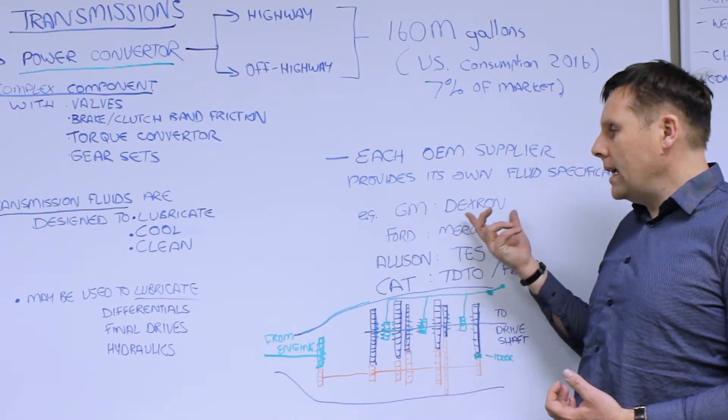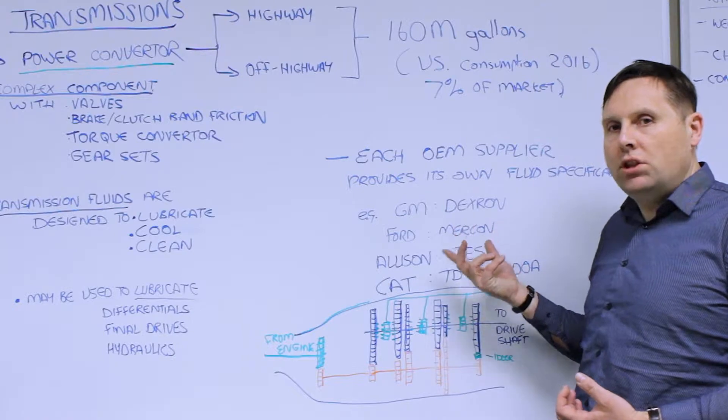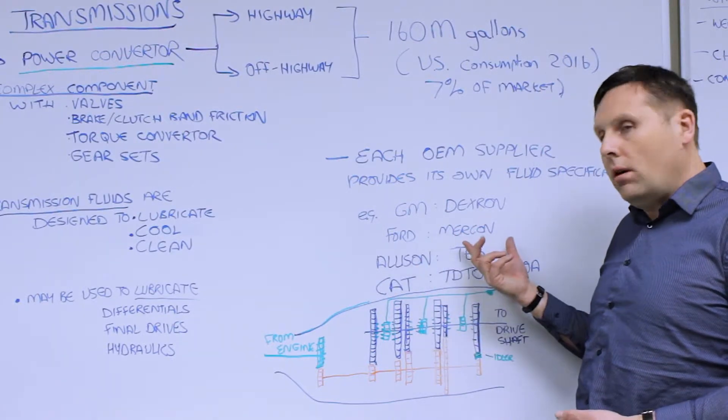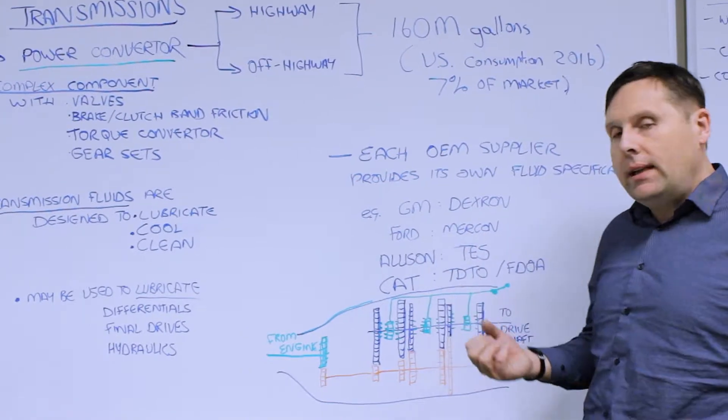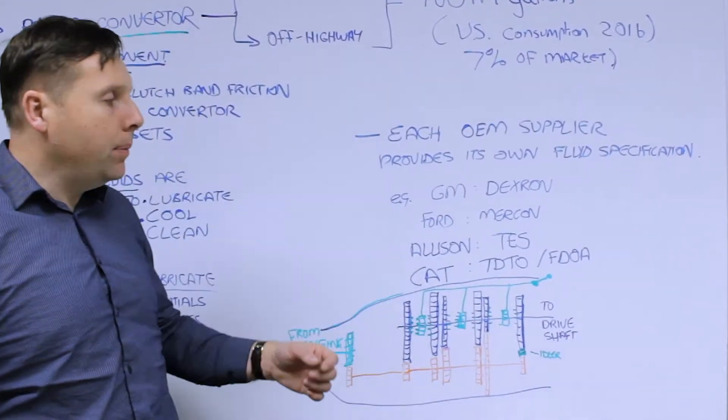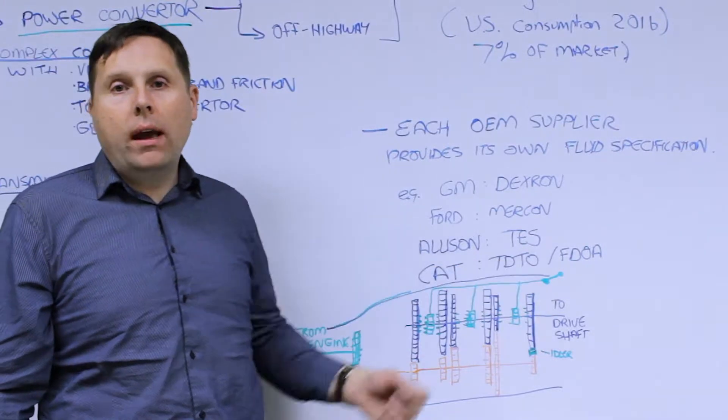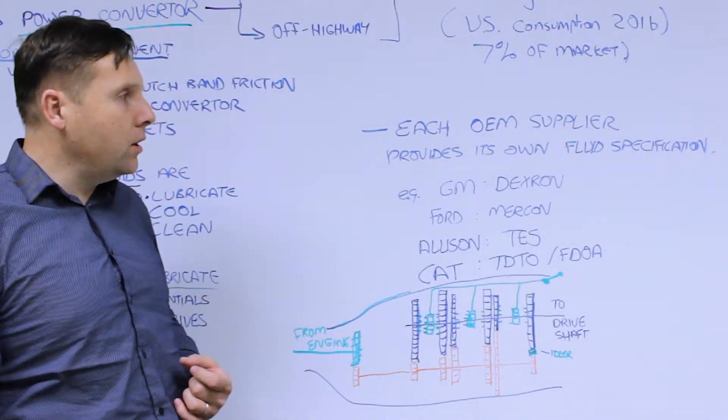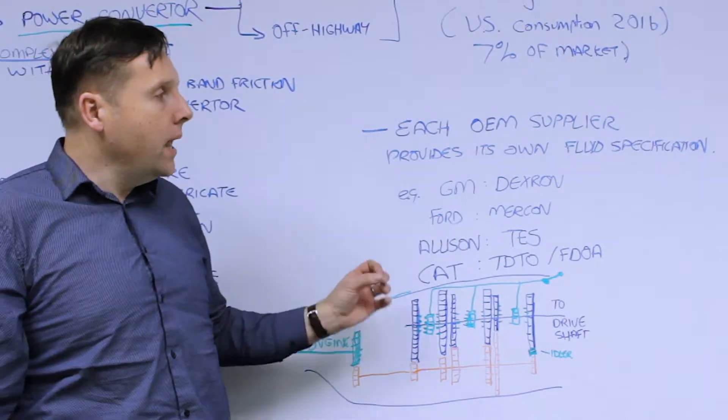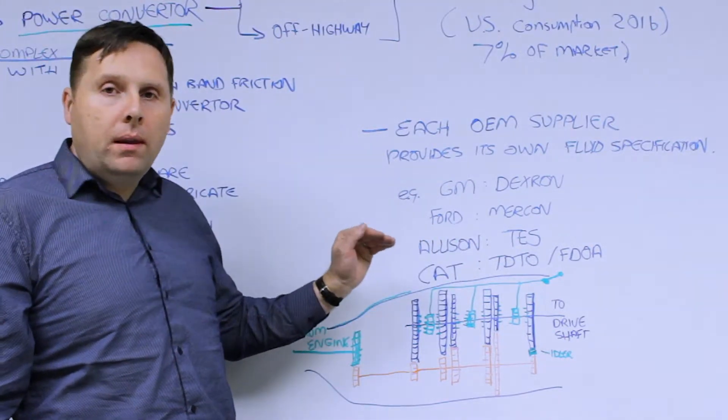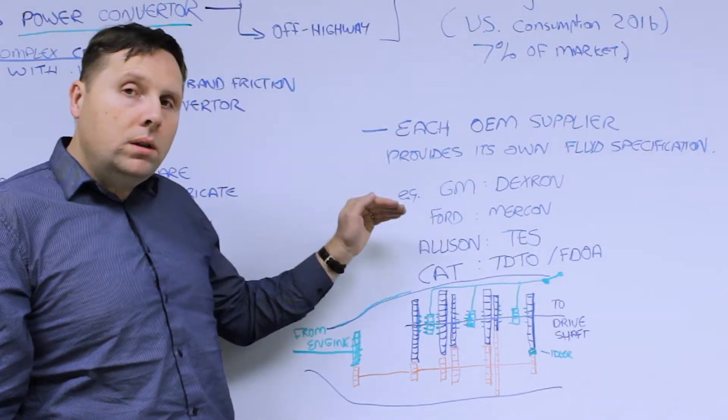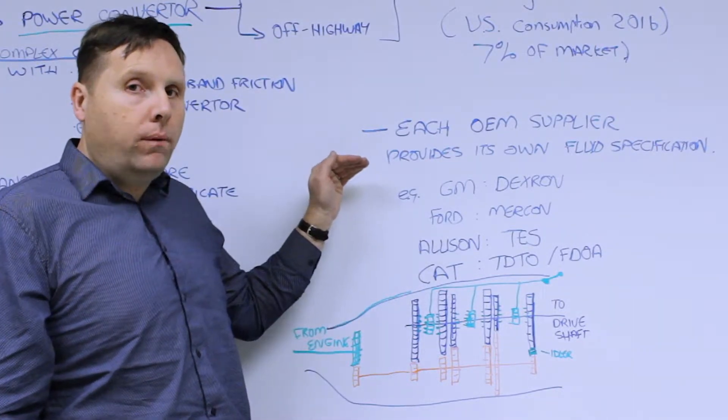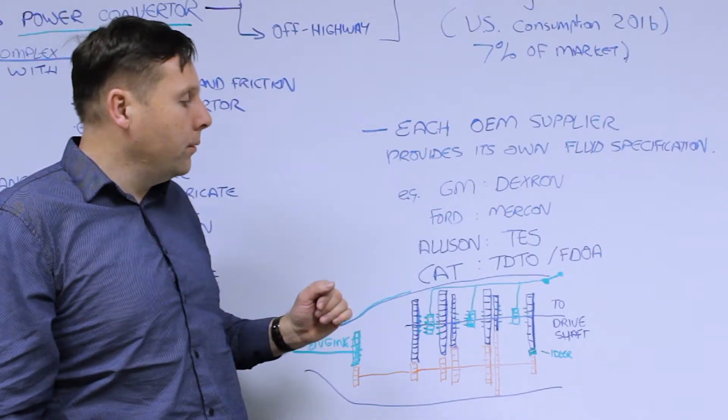Such as General Motors has their infamous Dexron spec, which has been around for almost 70 years. Ford has their Mercon spec. Allison has their TES specification. Caterpillar has their TDTO or FDOA, final drive and axle specification. So a variety of these are used. It is one of the specific markets where you must match the fluid specification to the actual model performance in order to have optimum operation.